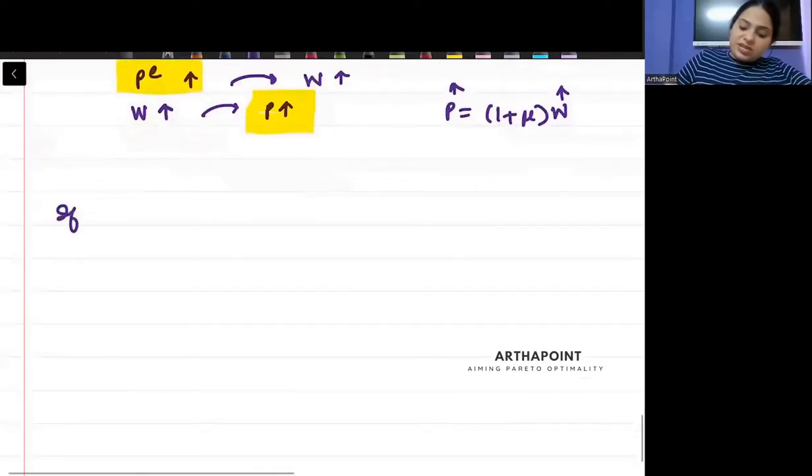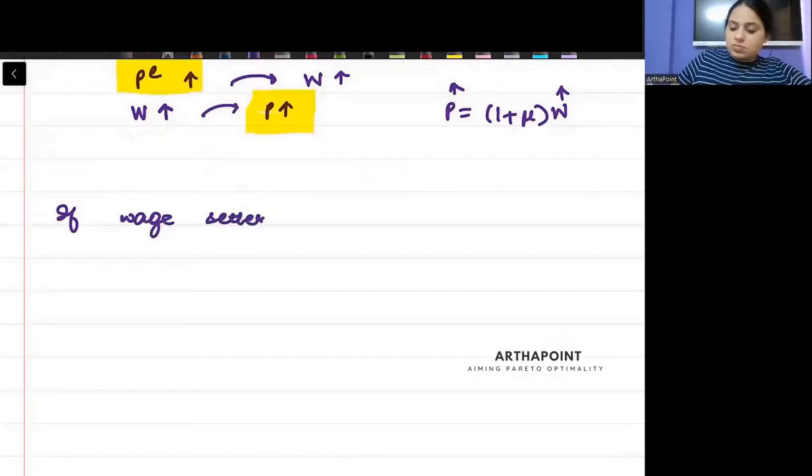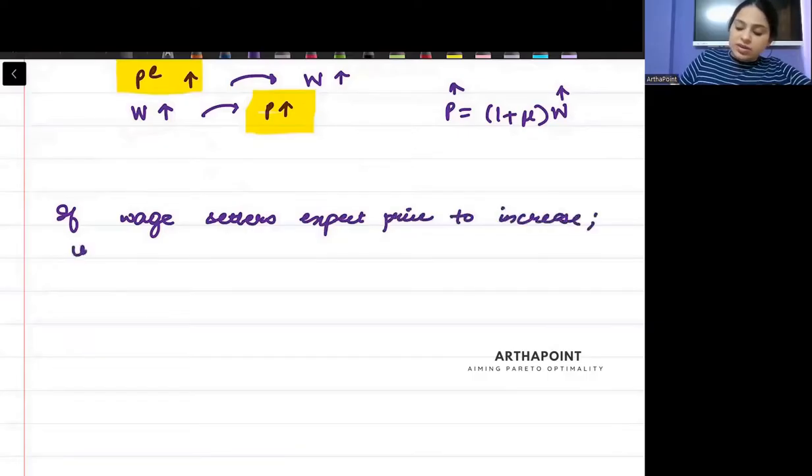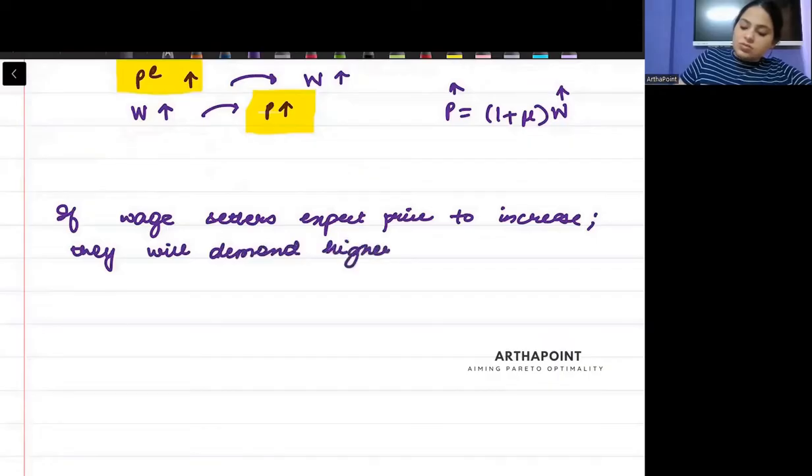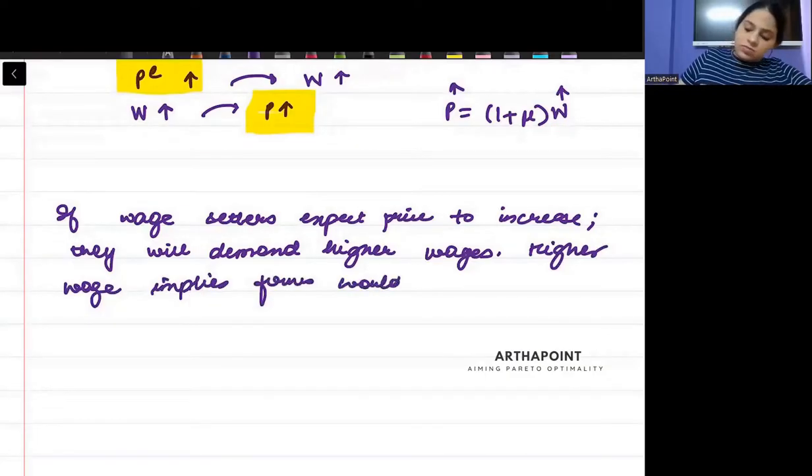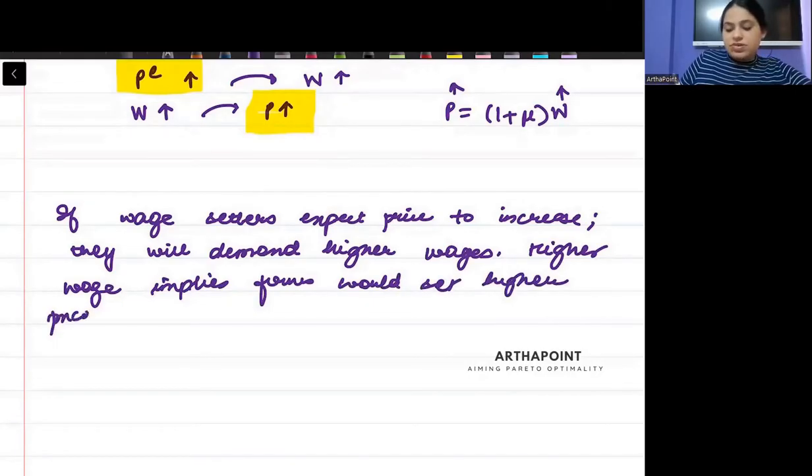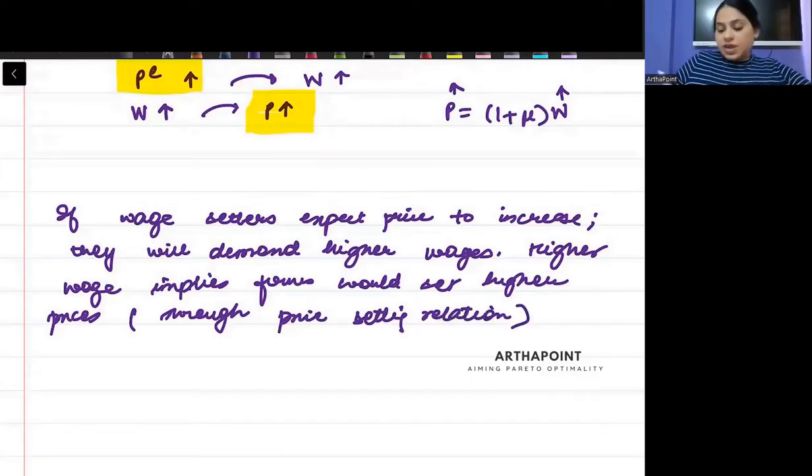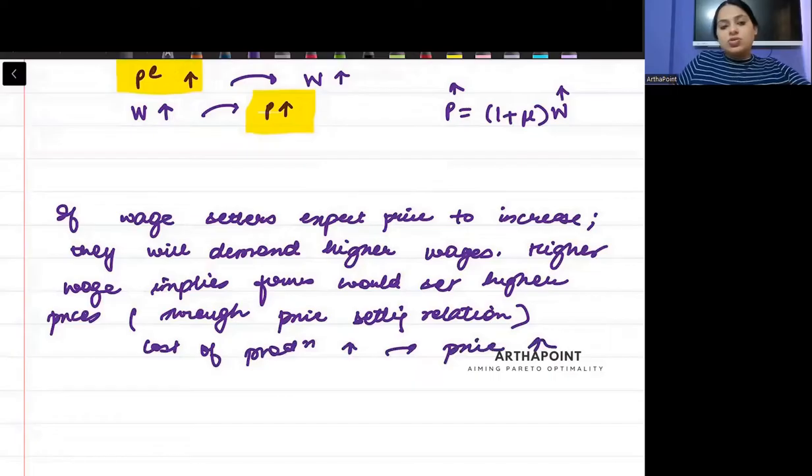Please write down: if wage setters expect price to increase, they will demand higher wages. Higher wage implies firms would set higher prices through price setting relation. When they ask for higher wage, the cost of production of firm increases. If the cost of production is increasing, you must increase the price of your product also. So price of product will increase.